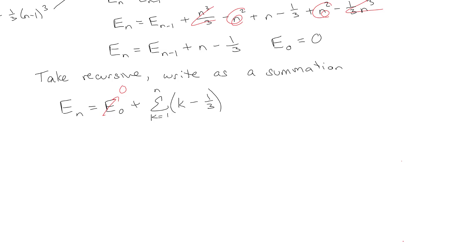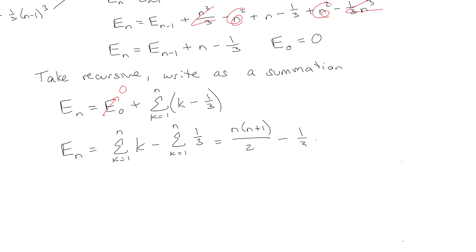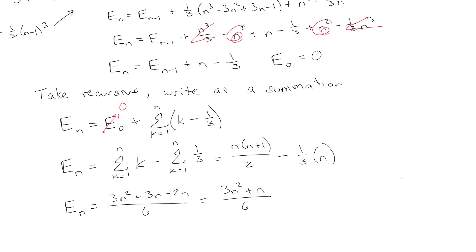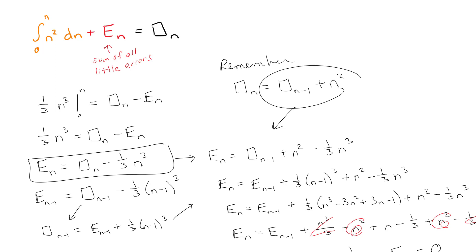Our error is given by the sum from k equals 1 to n of k, minus the sum from k equals 1 to n of one-third. The first sum is n times (n plus 1) over 2. The second is just one-third n. Finding common denominators gives e sub n equals (3n squared plus n minus 2n) over 6, which simplifies to (3n squared plus n) over 6. We now have a closed form for the error.